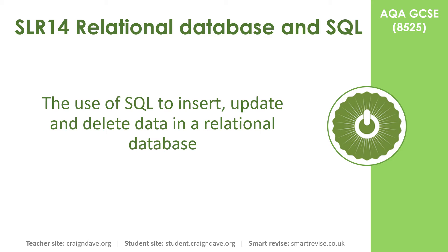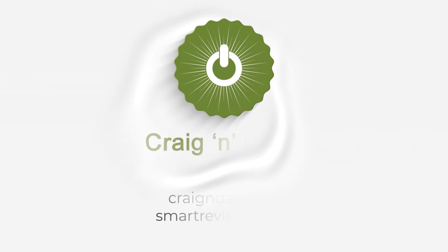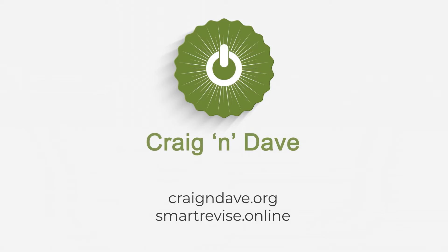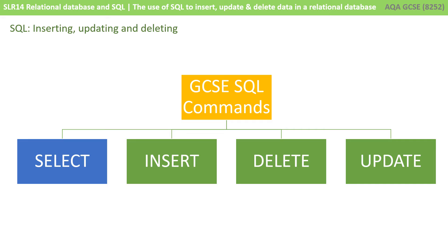In this video, we take a look at the use of SQL to insert, update and delete data in a relational database. In the GCSE exam, there are four main actions you need to be comfortable with performing on a database in SQL: selecting data, inserting, deleting and updating. We covered selection in the previous video. In this one, we're going to look at the other three.